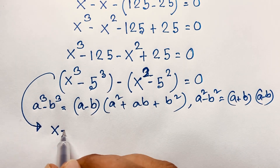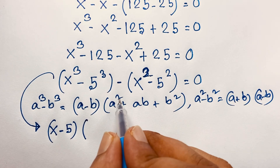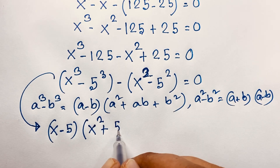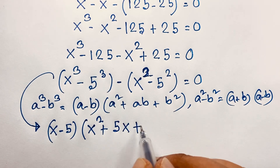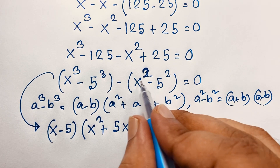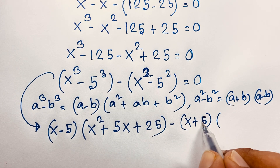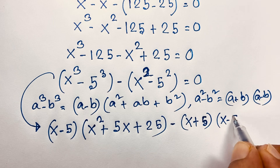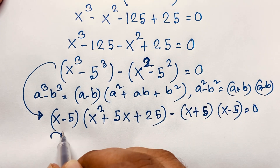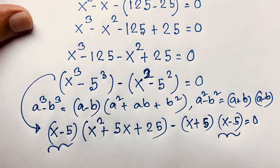Applying these formulas with a = x and b = 5: the difference of cubes gives (x - 5)(x² + 5x + 25), and the difference of squares gives (x + 5)(x - 5) equals 0. Notice that (x - 5) is a common factor in both terms.